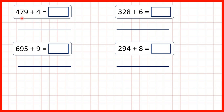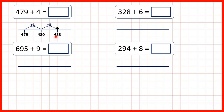First, we have 479 plus four. So on a number line, we can start with 479, and if we add one more, that takes us to 480 — so to a multiple of ten, a number that ends in a zero. But we've only added one, and we need to add four, so that means we need to add three more. And that gives us our answer: 483.